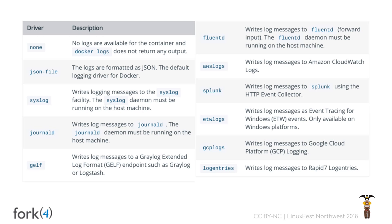One important thing: if you specify a log driver other than the json-file driver or journald, then if you do `docker logs` you will not see anything — it will only go to that output driver. If you use json-file or journald, `docker logs` will still work when you're on the host. There's also a log driver called `none` which suppresses all logging. If you have a Rails app that has Graylog configured directly and don't want standard out captured, you can specify `none` — that can be a security constraint to suppress log messages and do logging out of your application directly.